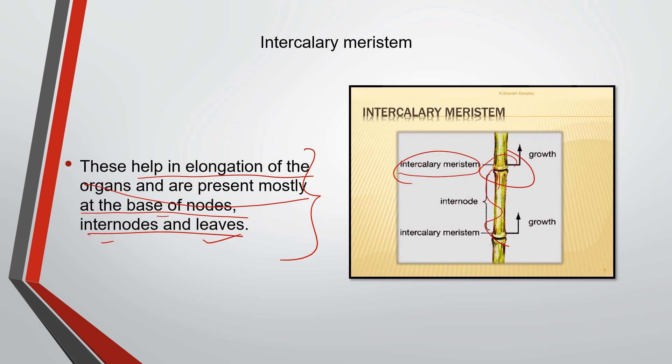So this is all about meristematic tissue and its three parts — apical, lateral, and intercalary meristem. Please go through the diagram and learn them properly before moving on to permanent tissue. If you have not yet subscribed to my channel, please do subscribe to get daily lesson updates as per your curriculum.